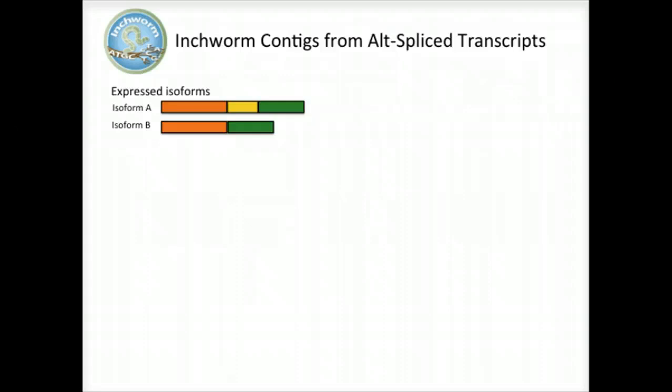For example, here are two expressed isoforms, which share the orange and green sequence regions in common. Isoform A has a stretch of unique sequence shown in yellow, such as coming from an exon skipped in isoform B.